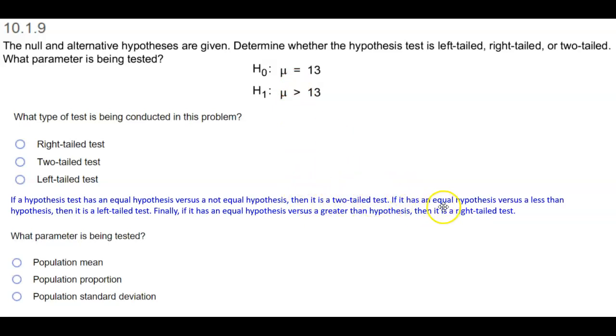If it has an equal hypothesis versus a less than hypothesis, then it is a left-tailed test. Finally, if it has an equal hypothesis versus a greater than hypothesis, then it is a right-tailed test.